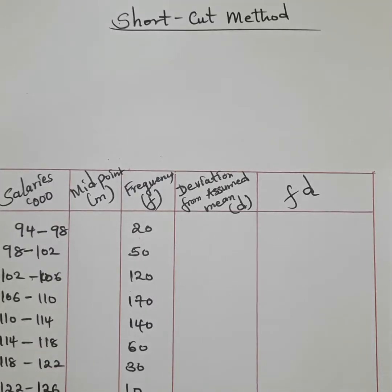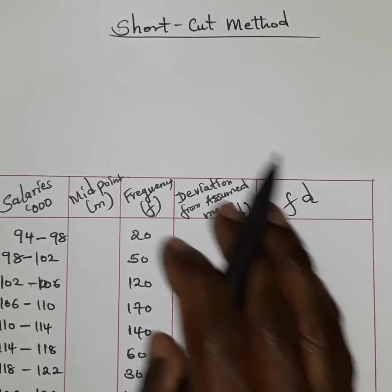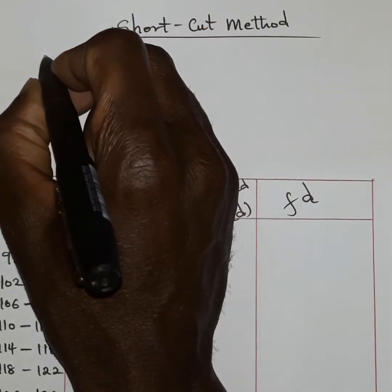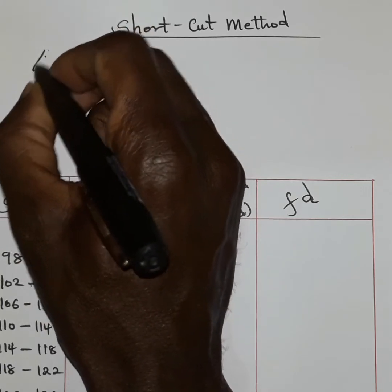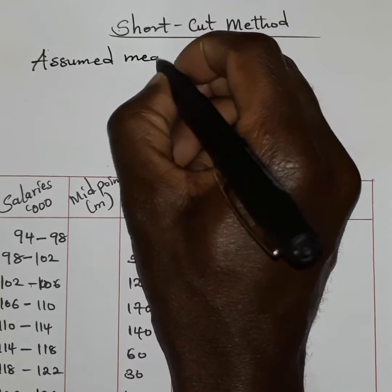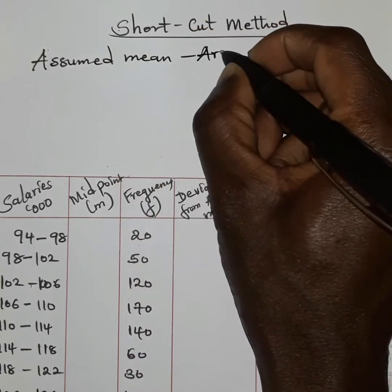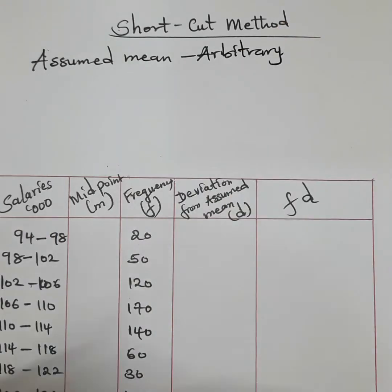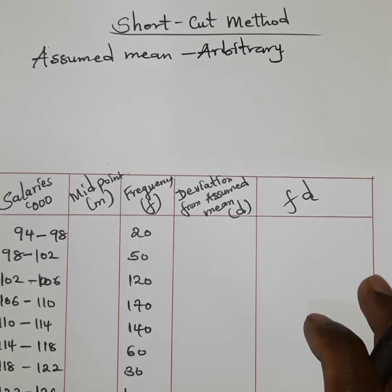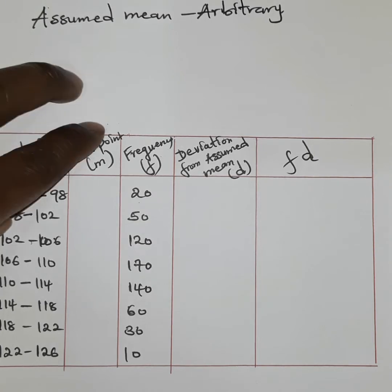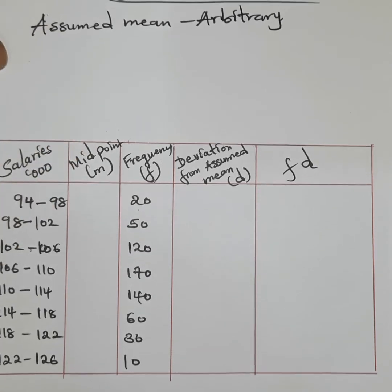We are going to use the shortcut method when determining the mean for this grouped data. When using this method, we introduce an element known as the assumed mean. The assumed mean is basically an arbitrary arithmetic mean taken at random, and we normally take it from the sample figures.